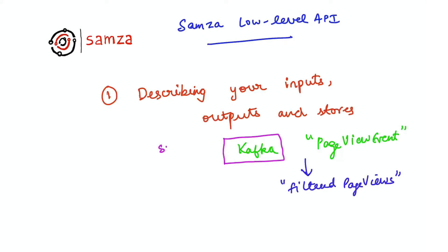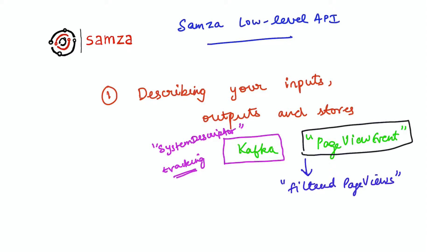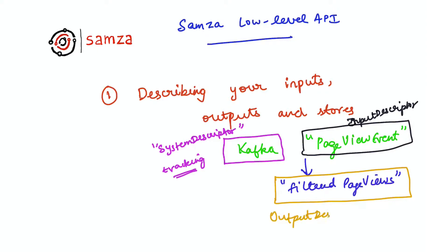Samza has a notion of a system descriptor that allows you to specify which system you're interacting with. In this example, you might want to talk to a Kafka cluster that's for tracking data. A Kafka cluster can obviously have multiple topics, so Samza uses a notion of an input descriptor to specify what topic you want to interact with. For each topic, you create an instance of an input descriptor. Similarly, your application can write to multiple output topics, and for each output topic you describe it using an output descriptor.